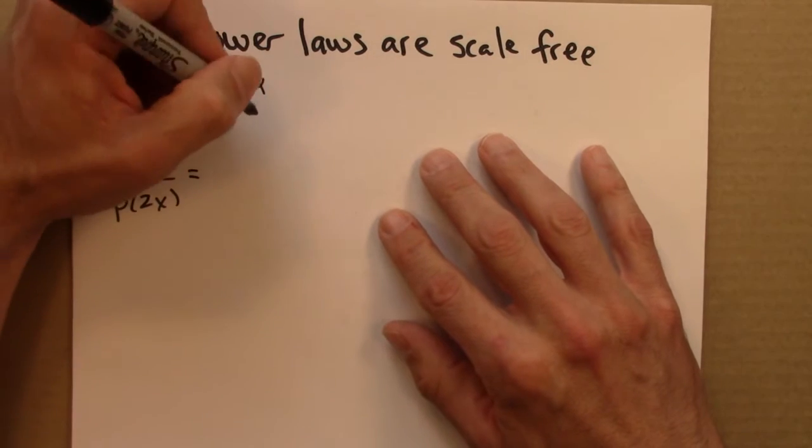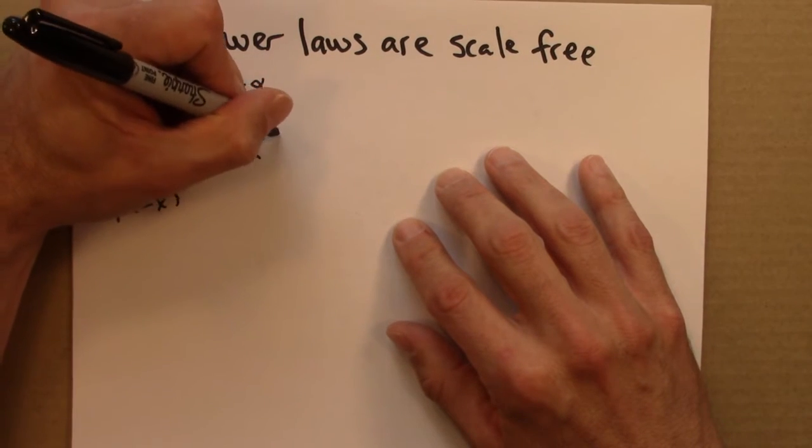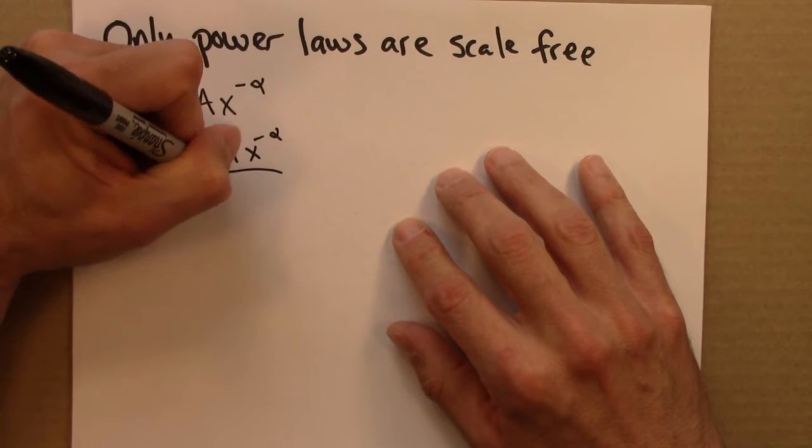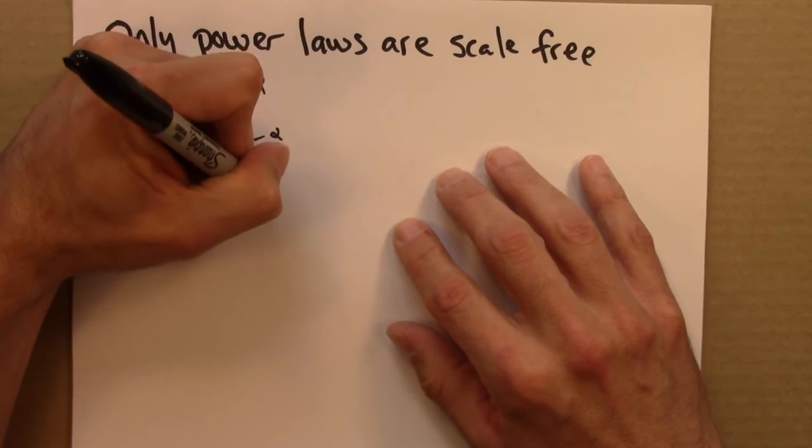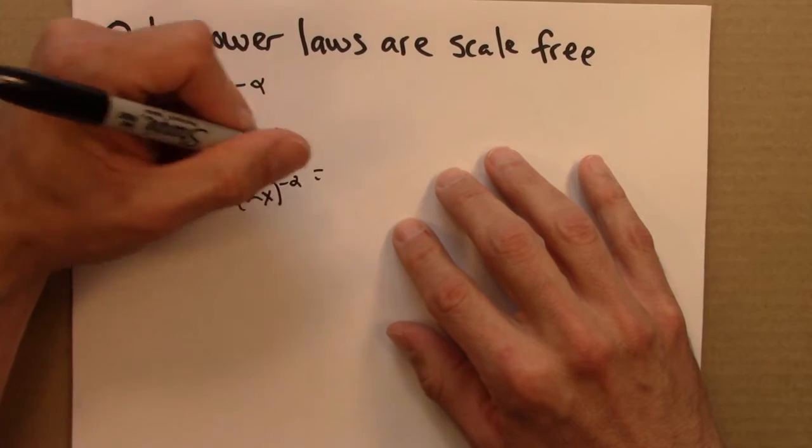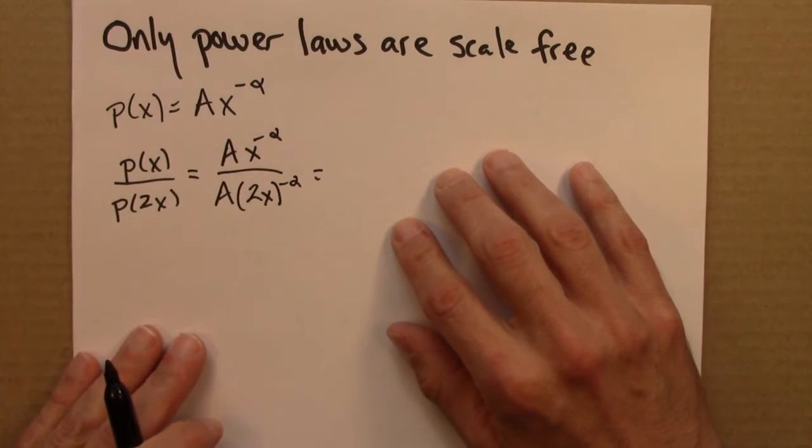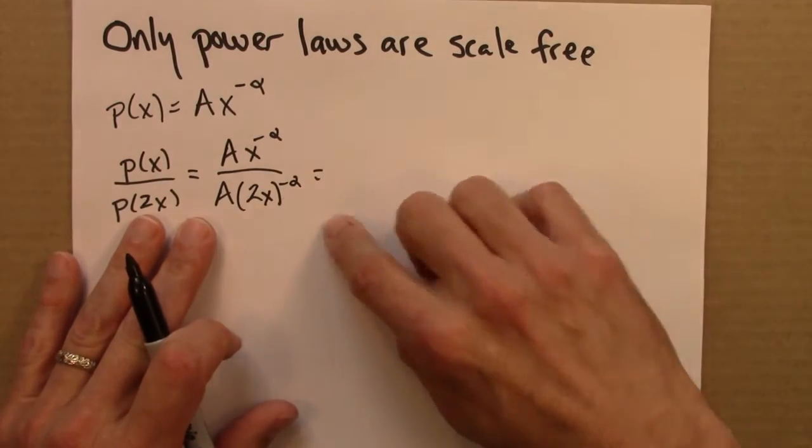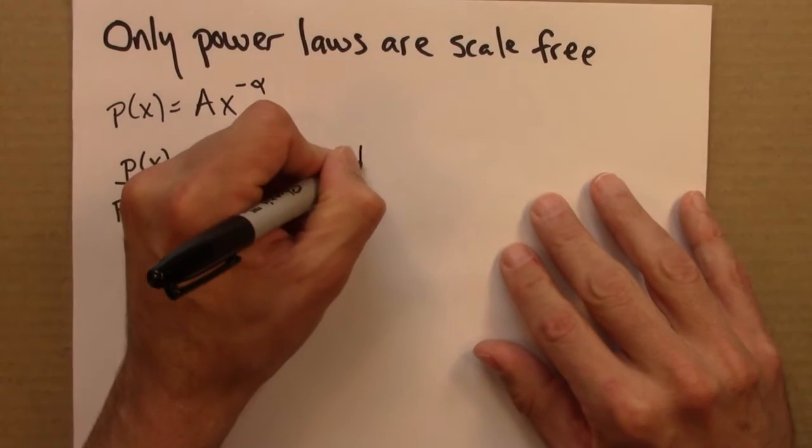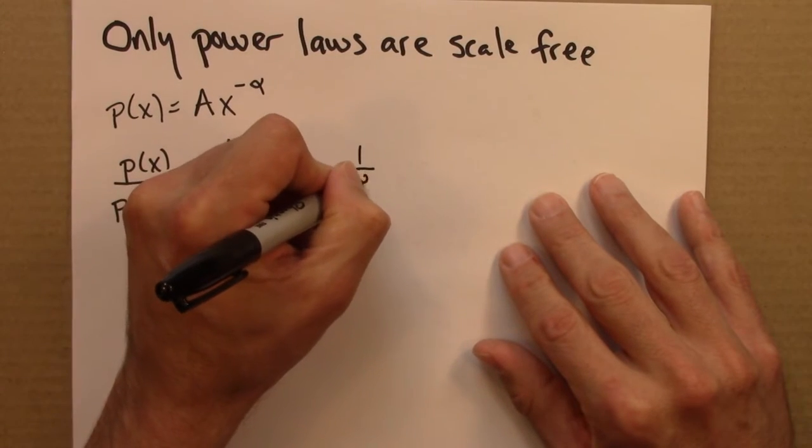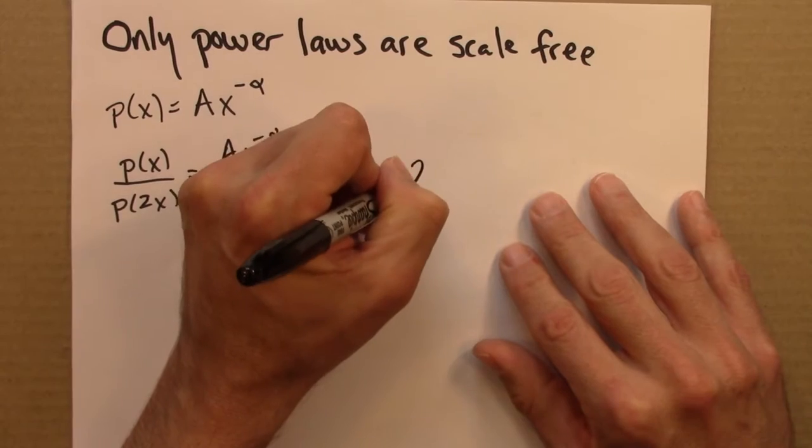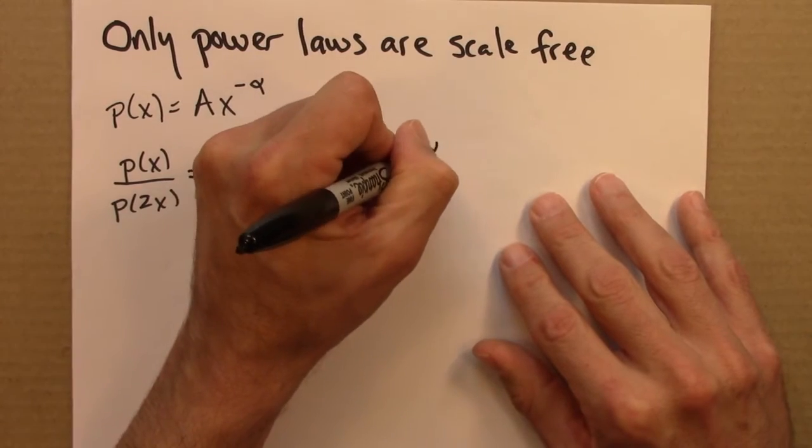Well the power law tells me this is A x to the minus alpha over A 2x to the minus alpha. And the A's cancel, the x to the minus alpha's cancel. I'm left with this, or 2 to the alpha.